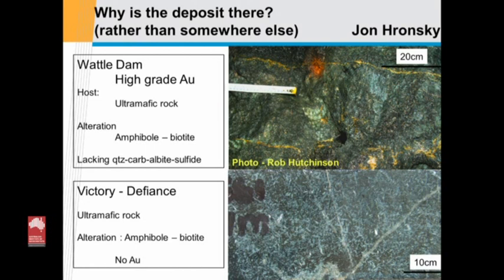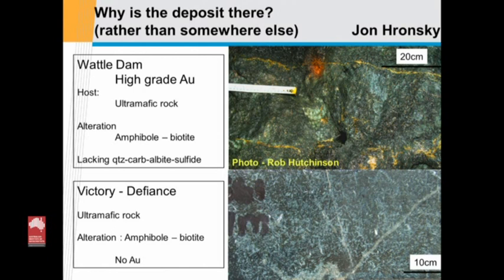The top photograph is Wattle Dam — high-grade gold veins, up to two or three centimetres wide and maybe a metre or so long, as well as lots of clumps of native gold. Sitting in an altered ultramafic, the alteration assemblage is biotite and anthophyllite. The bottom photograph is a rock from Sunites that might be the same composition and same mineralogy — it's probably 200 metres from a high-grade gold resource, and there's nothing in it. If you imagine you're an ant in that top picture sitting five centimetres away from one of those gold veins, you would not know it was there. That encapsulates the problem: why is the deposit there rather than somewhere else?